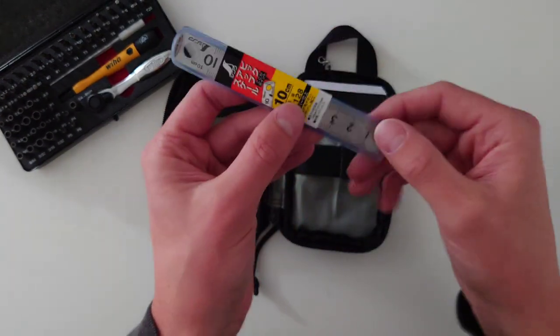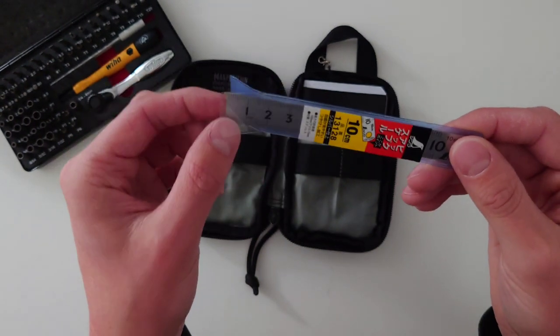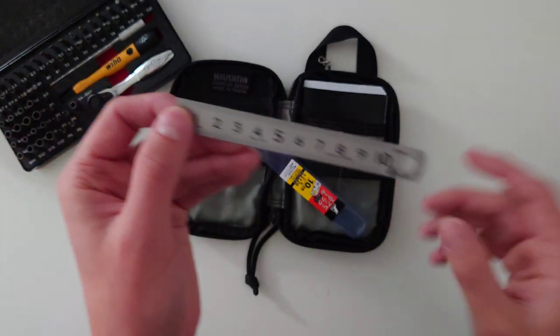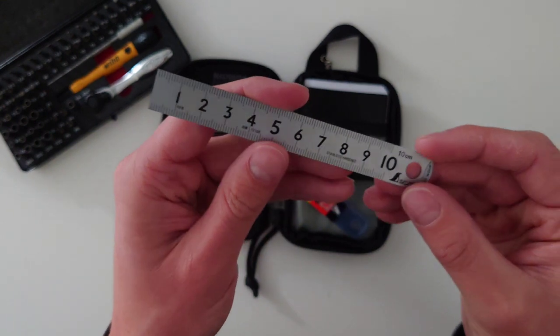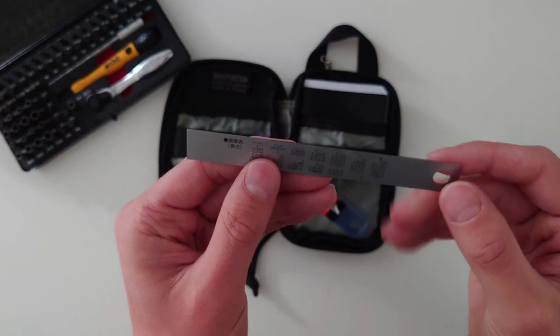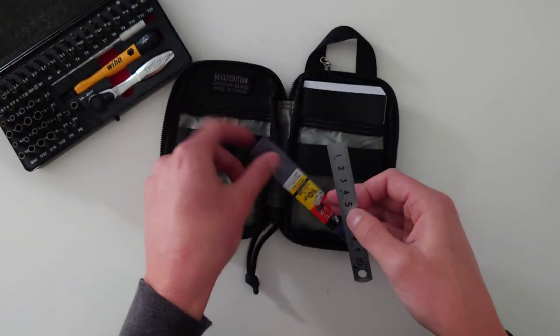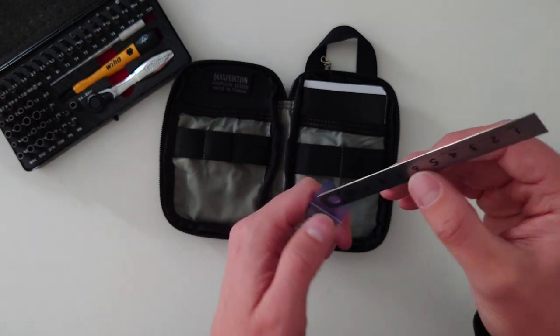Next, I've got a 10mm ruler. I think this is probably the only 10mm ruler you can buy. I was originally going to cut a 15mm ruler down. But, I just like the idea of having everything really precisely made, high quality. So, I didn't want to go about it that way.